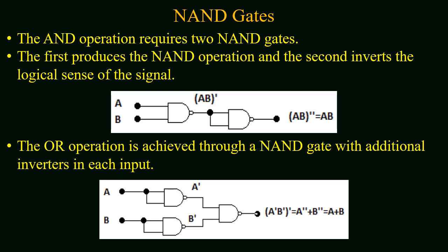The AND operation requires two NAND gates. The first NAND gate produces the NAND operation: for inputs A and B, the output is (A · B)'. A second NAND gate inverts that signal, giving (A · B)'' = A · B, which is the AND operation.